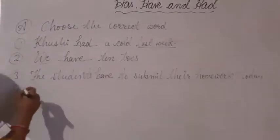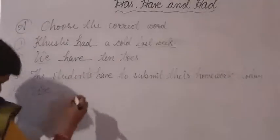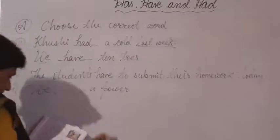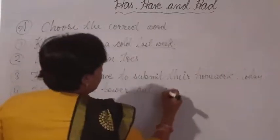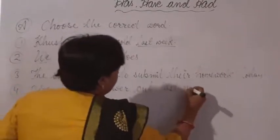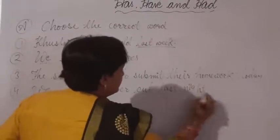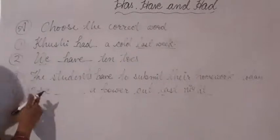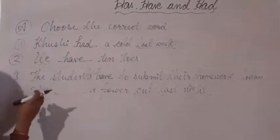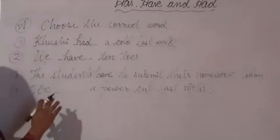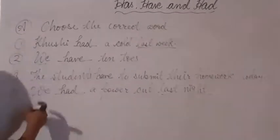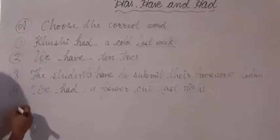Fourth: 'We had a power cut last night.' This sentence tells us about a past action — last night indicates past tense. For had, we do not check the subject; we use had with all subjects. We had a power cut last night.